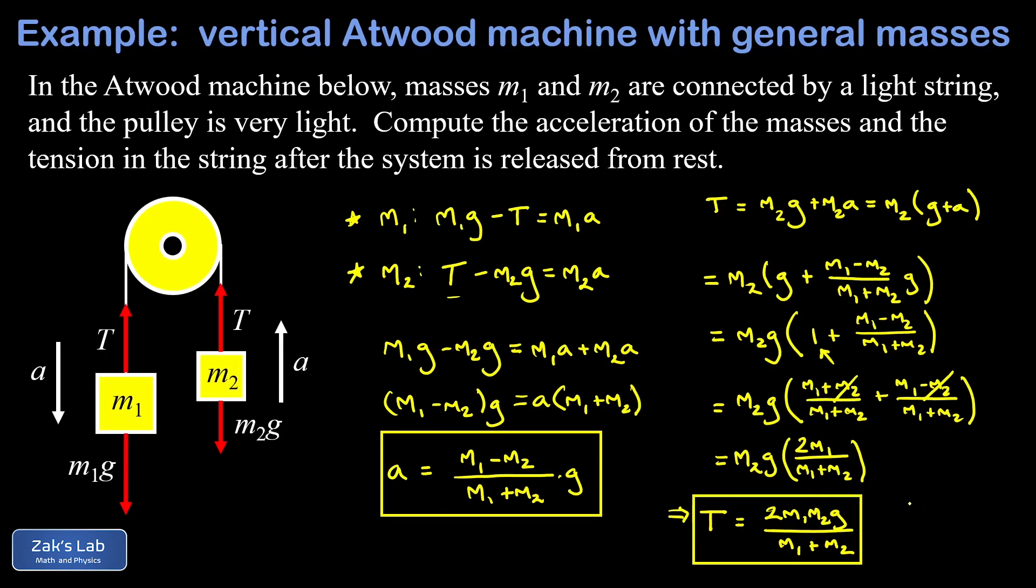Thinking about that case where m1 is equal to m2 and I just call them both m, plugging into this formula I would get 2m times m or 2m squared g over m plus m which is 2m. The twos cancel, one of the m's cancels and I get a tension of mg.